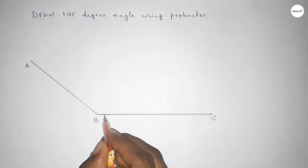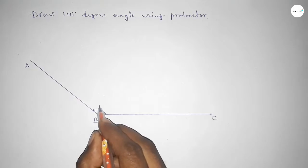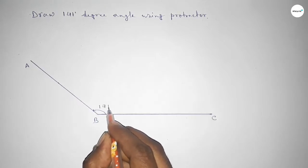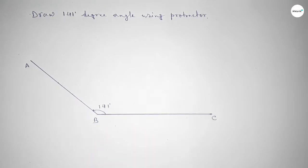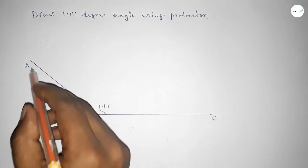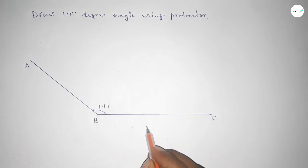So angle ABC, this is 141 degrees. Therefore, angle ABC